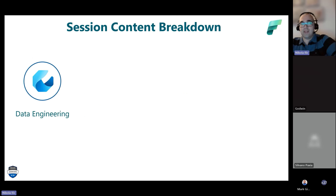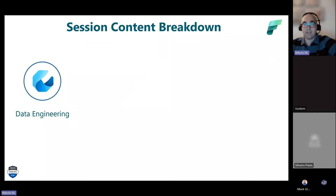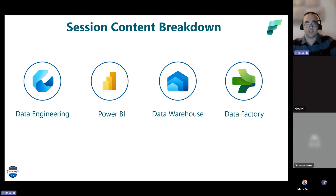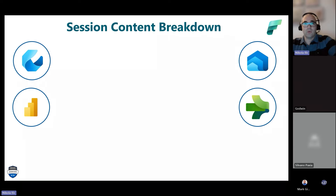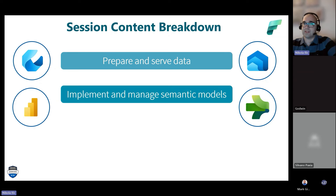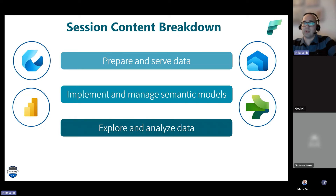Microsoft Fabric has several experiences; four are relevant for DP-600: data engineering, data warehousing, data factory, and Power BI. Today's session covers the three major skill areas: preparing and serving data, implementing and managing semantic models, and exploring and analyzing data.